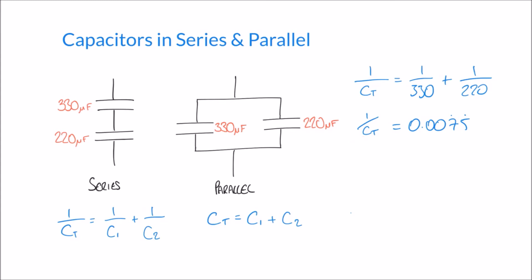And so the important rearrangement here is to move that 1 over to the other side of my formula, so I can see that the total capacitance is 1 over 0.0075 recurring.